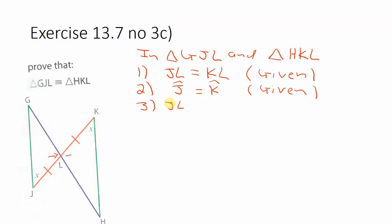So angle GLJ equals angle KLH. And the reason is vertical opposite angles.